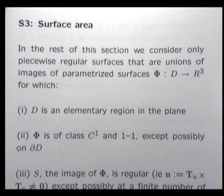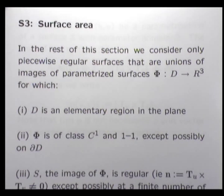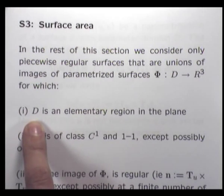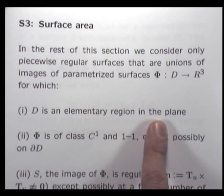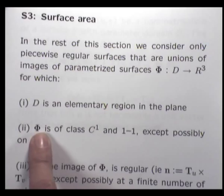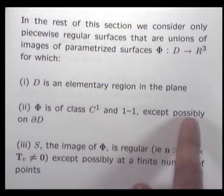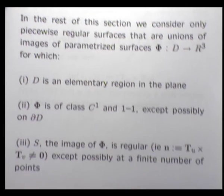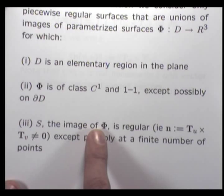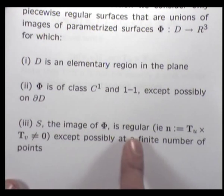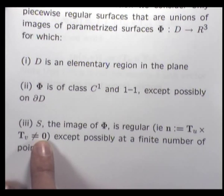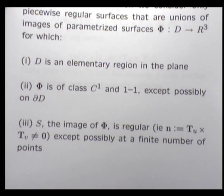We're going to make some assumptions about the surfaces that we deal with — three key assumptions. The domain of our parametrization is going to be an elementary region in the plane. Secondly, the components of our parametrization are C1 — in other words, the partial derivatives are going to be continuous. The mapping is going to be one-to-one except possibly on the boundary. Thirdly, the image of our parametrization — the surface — is regular. In other words, this cross-product of tangent vectors is non-zero.